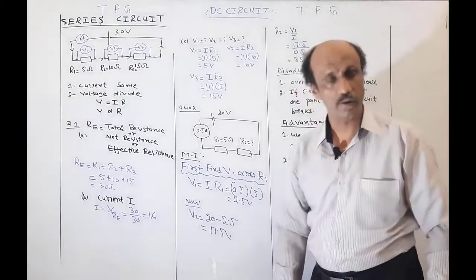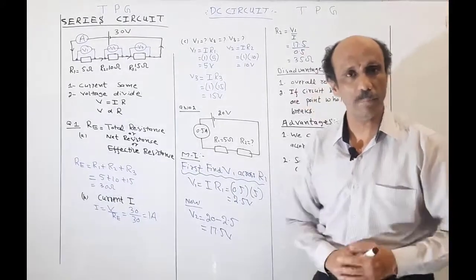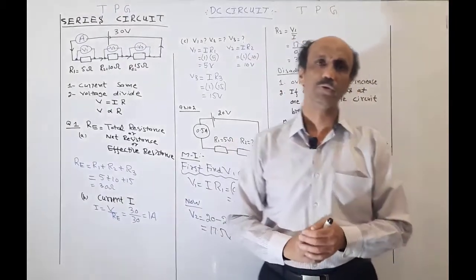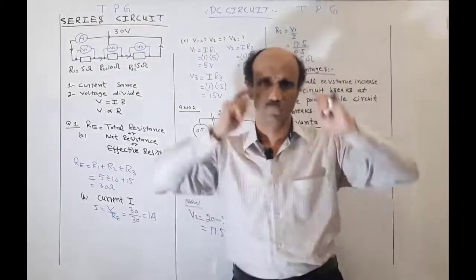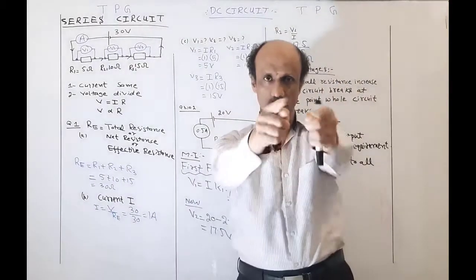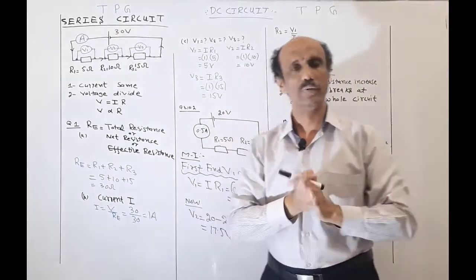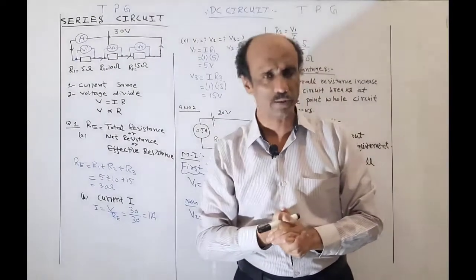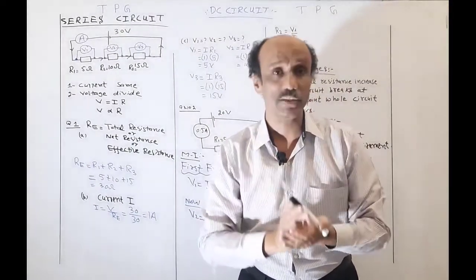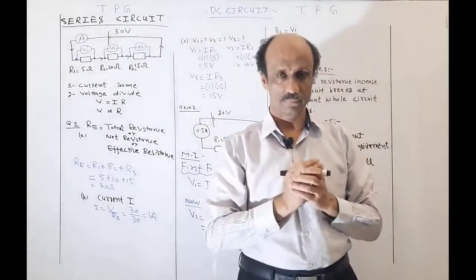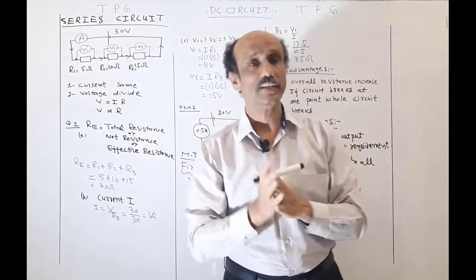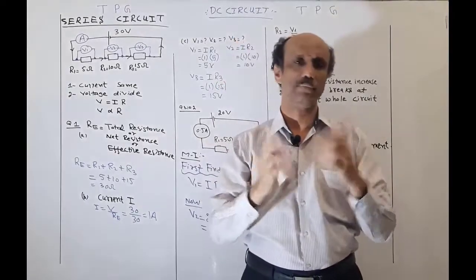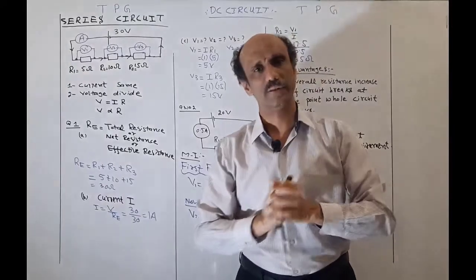Hello students, I am Muhammad Kamran Halil from the YouTube channel The Physics Gurus. Today we will continue from the O Levels topic: DC circuits. DC circuits have two types — number one is a series combination, and number two is a parallel combination.